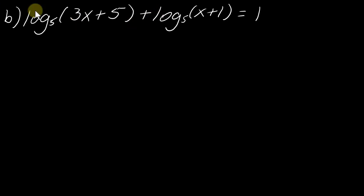So for b, now I have log base 5 of 3x plus 5 plus log base 5 of x plus 1 equals 1. So I strongly recommend for this one that you pause the video and try this on your own. Same idea here. So this side, I can multiply these factors together. So this is going to be log base 5 of 3x plus 5 times x plus 1 equals 1.